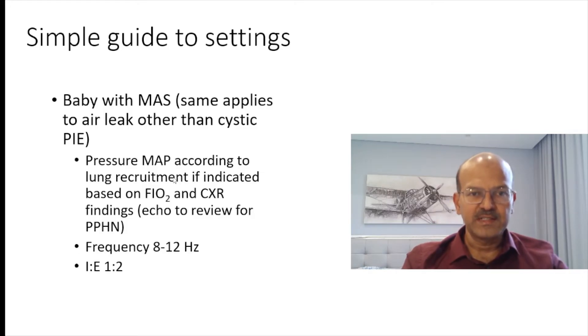Only in meconium aspiration you would consider recruitment. In air leak or cystic PIE you wouldn't recruit the lung.